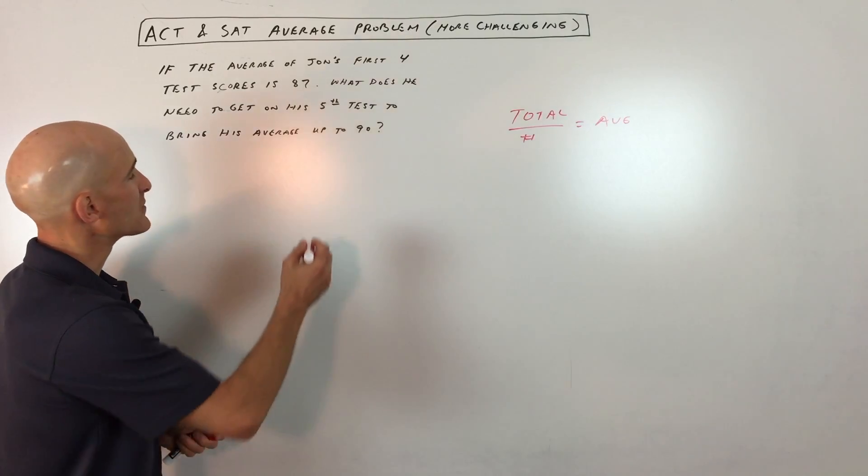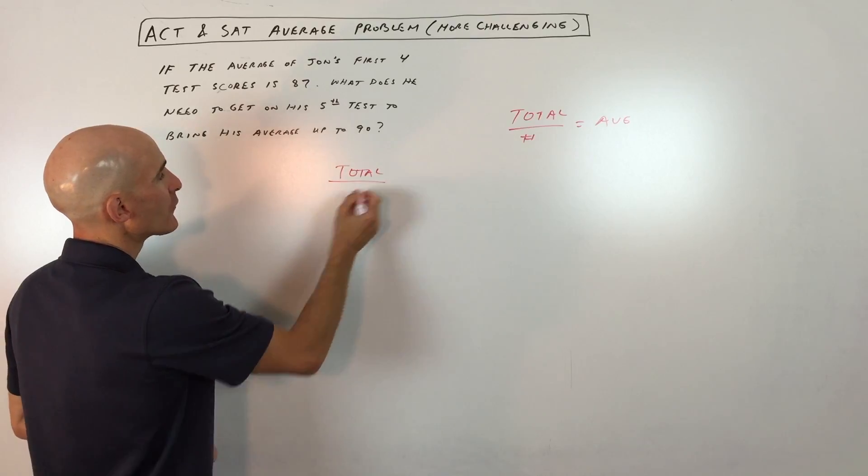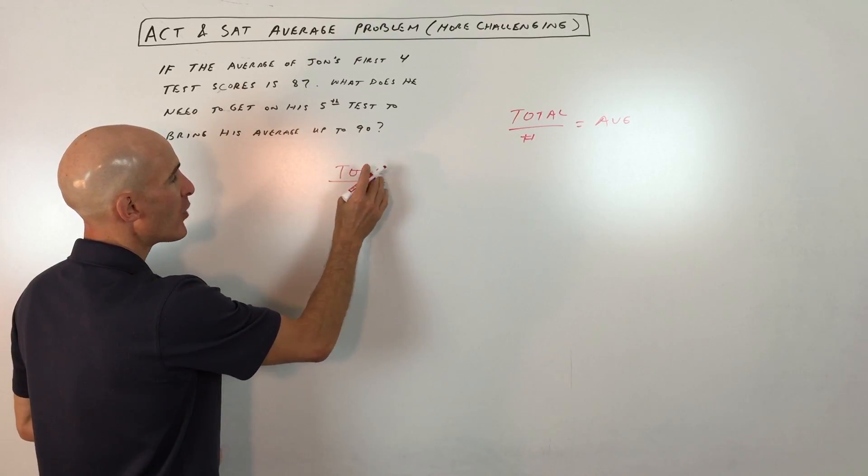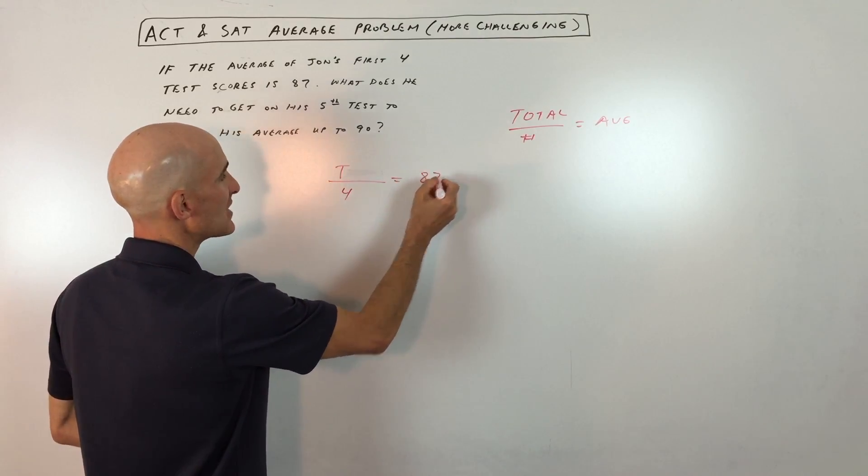For his first four tests, but we know the total number of points—let's call that T—divided by four since he took four tests, and that means his average is 87.